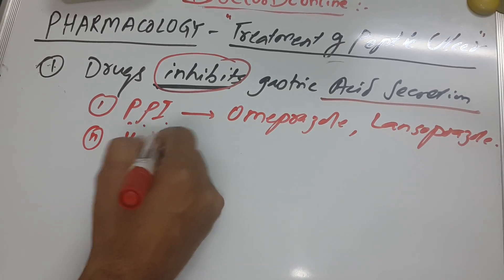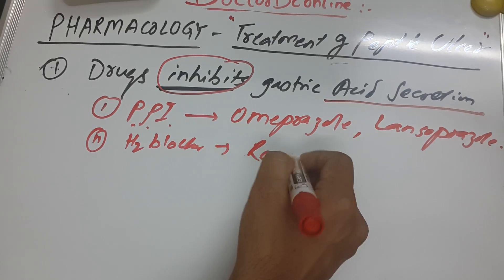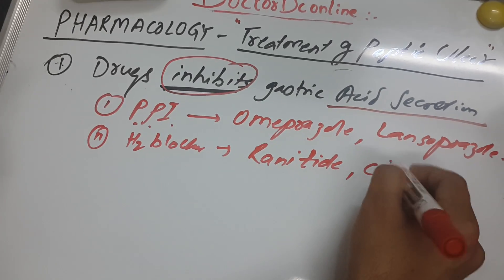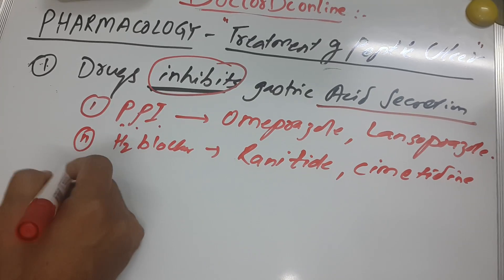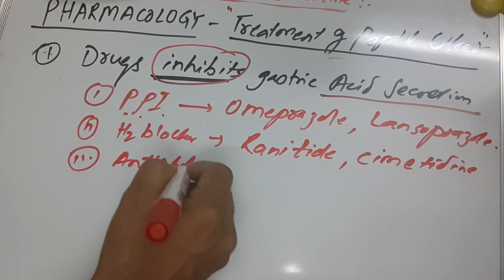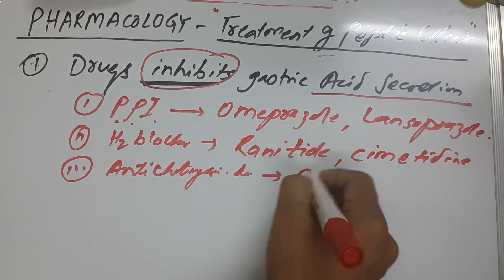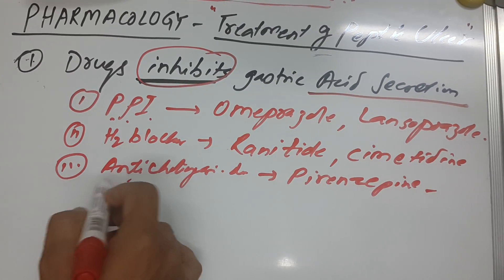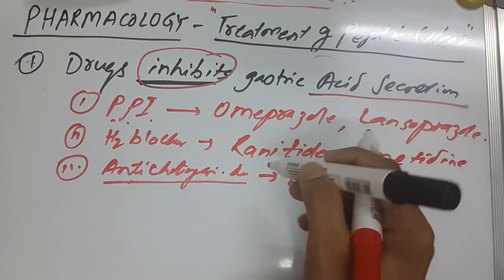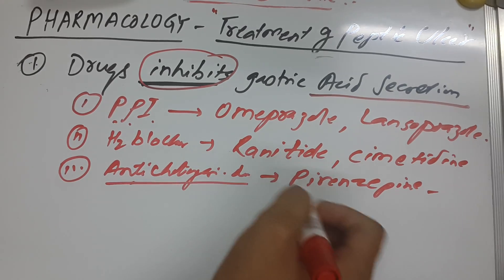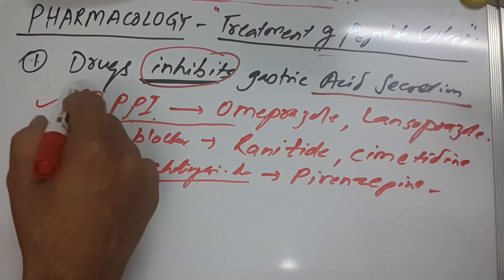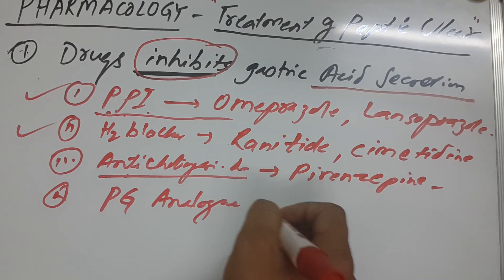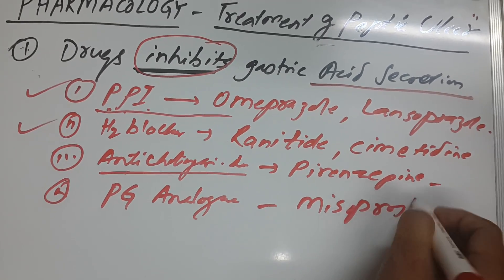The second group is H2 blockers. I prefer ranitidine because it has fewer side effects compared to cimetidine, though we previously used cimetidine. The third group is anticholinergic drugs: pirenzepine and telenzepine. I don't prefer anticholinergics because they have very low efficacy in comparison to PPIs. I prefer PPIs and H2 blockers.